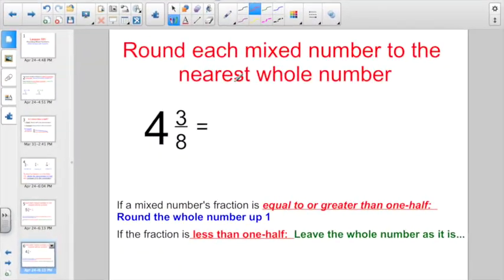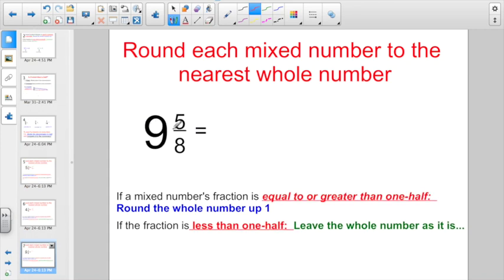Round each mixed number to the nearest whole number. 4 and 3/8. So half of 8 is 4. Compare the numerator. This guy is less than a half, so I'm going to keep him rounded down as 4. 9 and 5/8. Half of 8 is 4. I compare that to the numerator. 5 is more than 4. So I'm going to round up to 10.